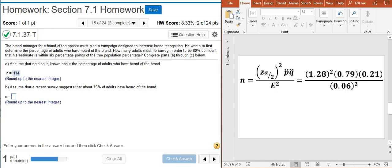We're still 80% confident of the estimate, so our critical value doesn't change. And we still want to be within six percentage points of the true population percentage, so this value for E doesn't change.